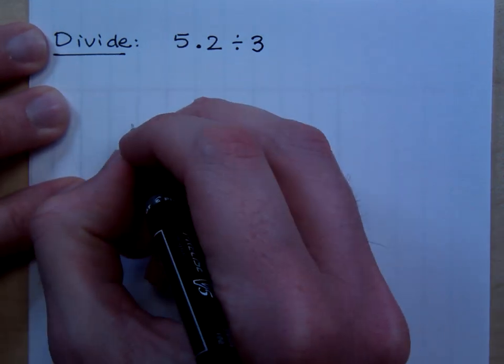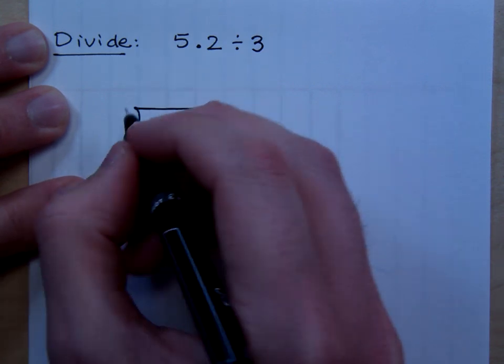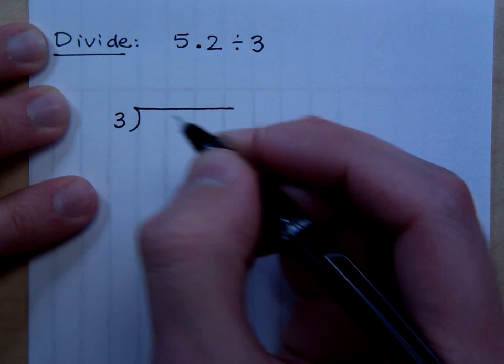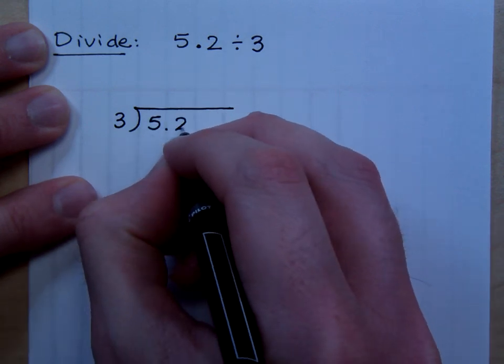So, let's set up the long division the right way. What goes on the outside of the division? 3 goes on the outside because that's the divisor, and the 5.2 goes on the inside.